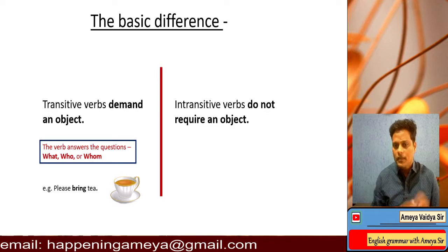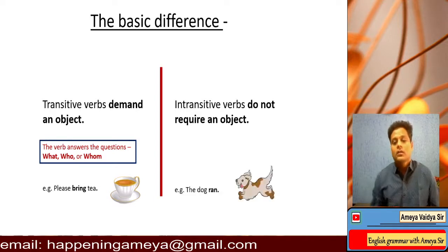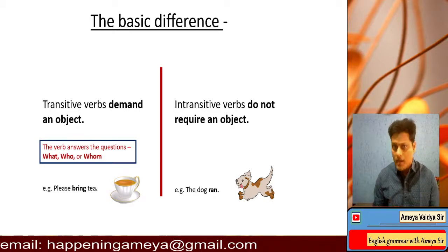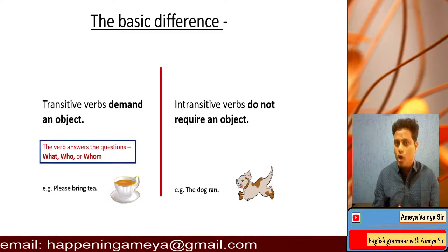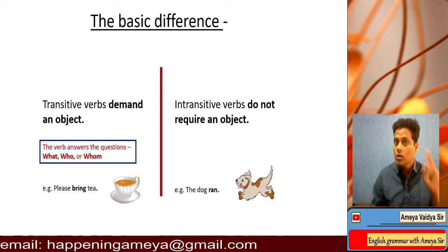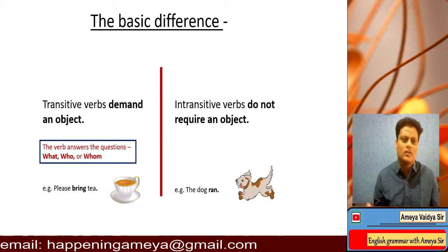Talking about intransitive verbs — intransitive verbs do not require an object. Let's consider an example: 'The dog ran.' You don't want to ask 'ran what?' The dog ran — it's complete sense by itself. You don't need an object after 'ran.' So such verbs are intransitive. You might want to pause on this screen to make your notes. The basic difference is: transitive demands an object and answers what, who, or whom; intransitive verbs do not require any particular object.